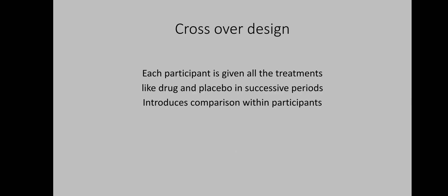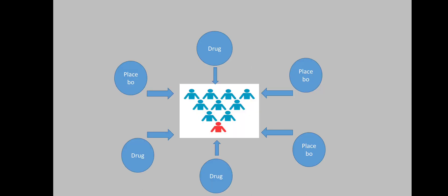Another design of randomized control trials is the crossover design, in which each participant is given all the treatments — the drug and the placebo — in successive periods. The crossover design introduces comparison within the participants of the group. This picture shows the crossover design, where each participant receives both the actual drug and the placebo.